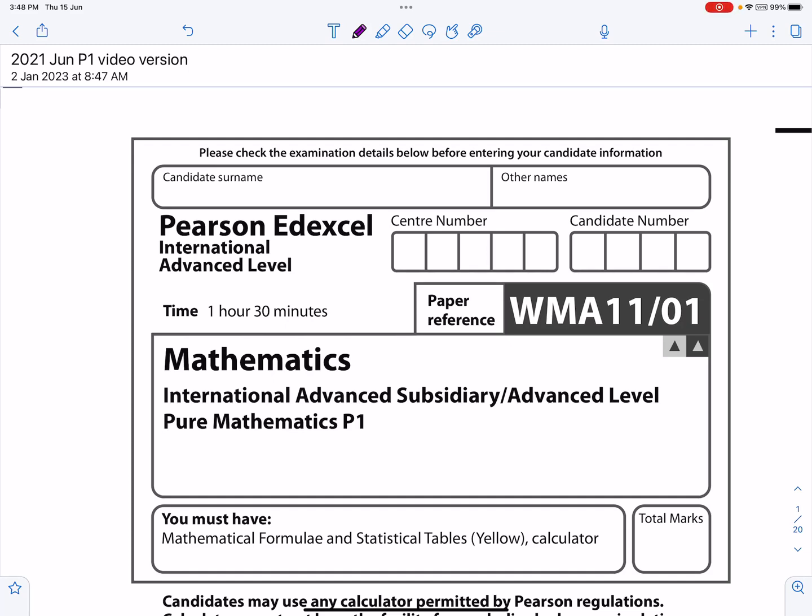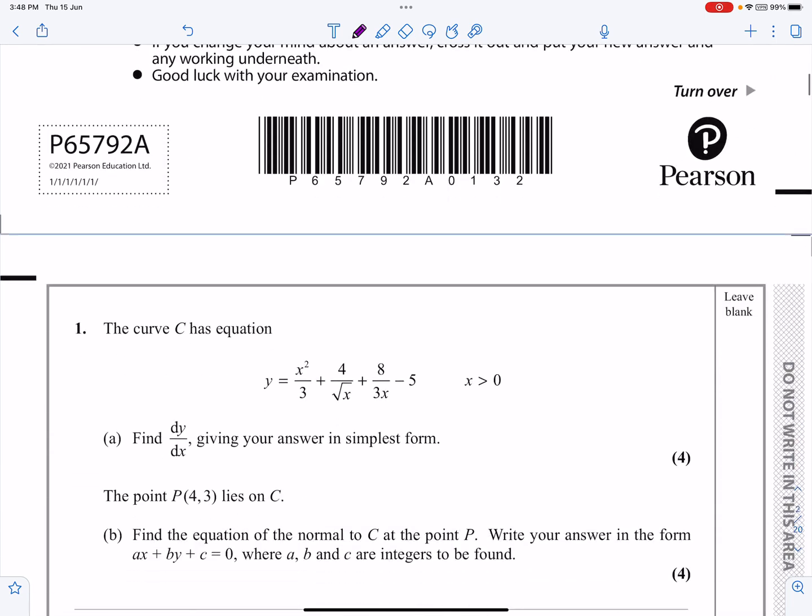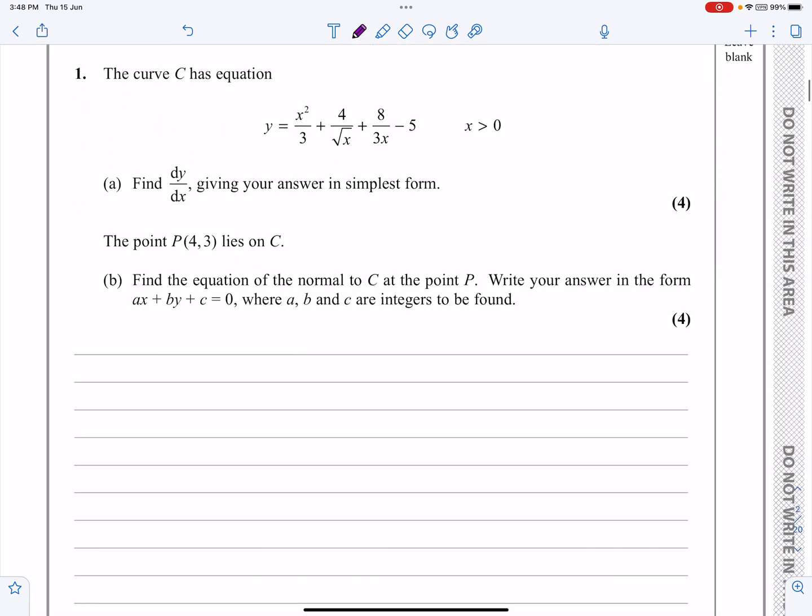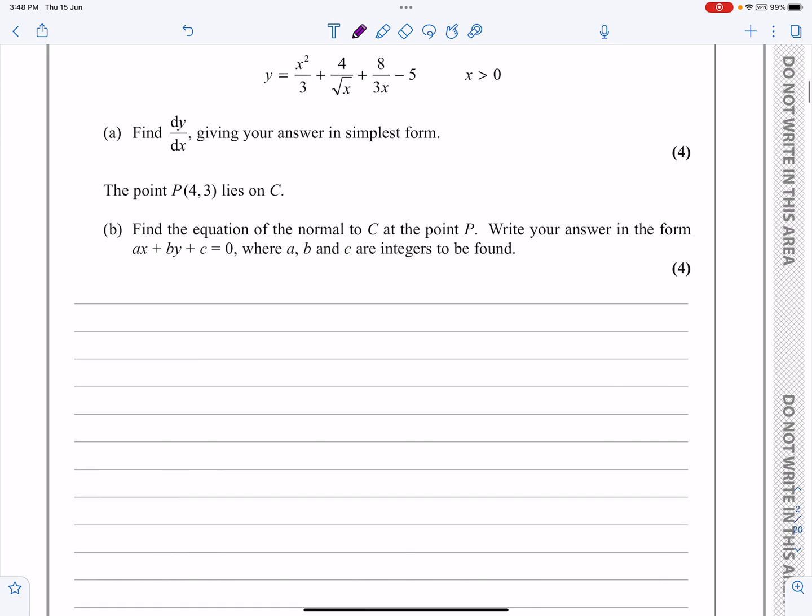Okay, this is the P1 paper from June 2021. We're going to be looking at question number 1 here. If we have a look at question number 1, we can see that this is a differentiation question and in the second part we're going to be working out the equation of a normal. So, let's start with the differentiation part, part A.